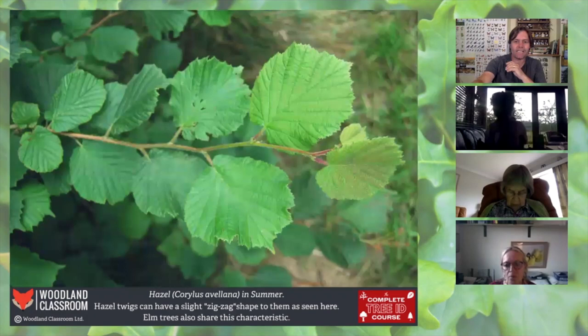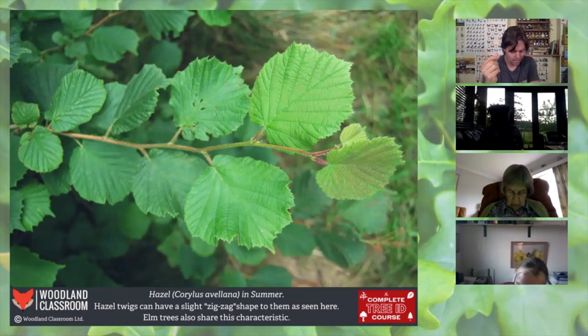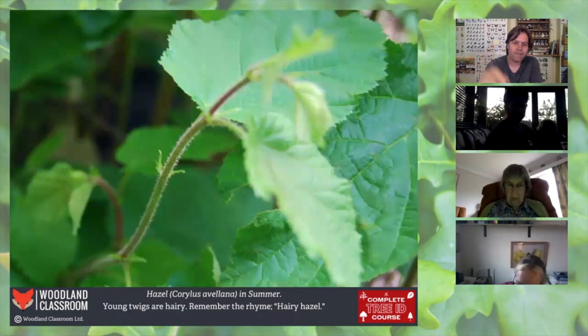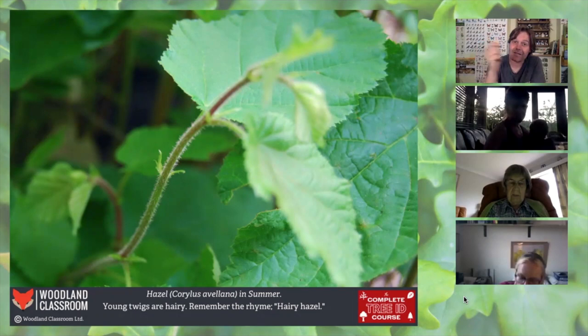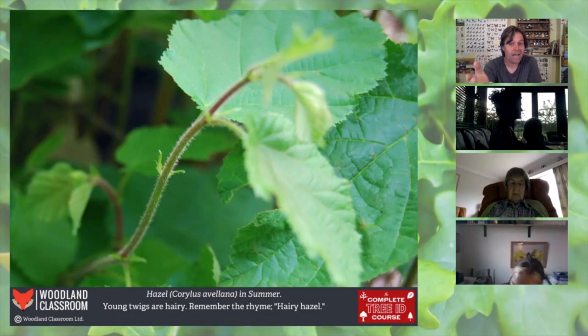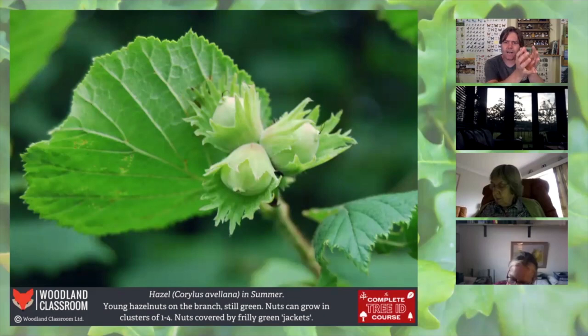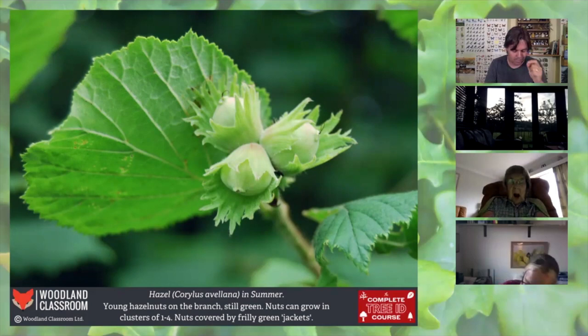The hazel twig is also hairy — look at that fresh bristly hair on the new growth. You don't get this with alder, which had a triangular twig. With hazel it's a round twig and it's hairy. There's an easy rhyme: hairy hazel. If you remember that, you won't go far wrong. If you're still confused, look across the whole tree for young hazelnuts developing in summer — encased in green frilly bracts — which are well on their way toward autumn. Alder has no such thing; it has those cones instead.